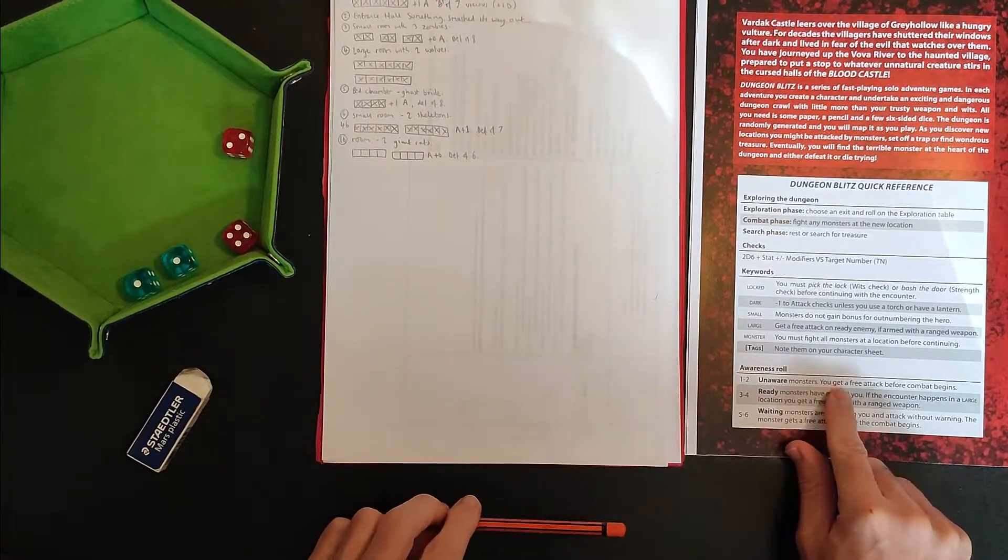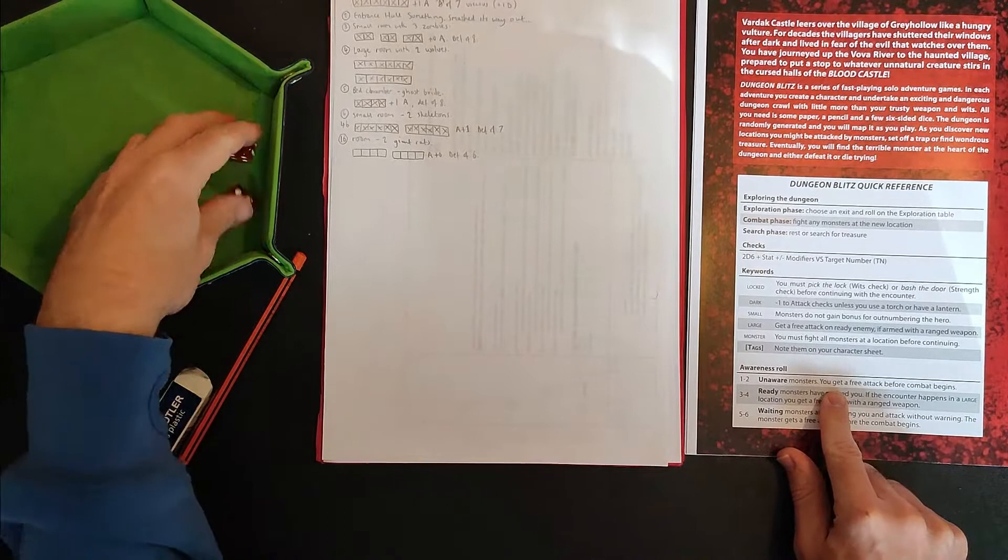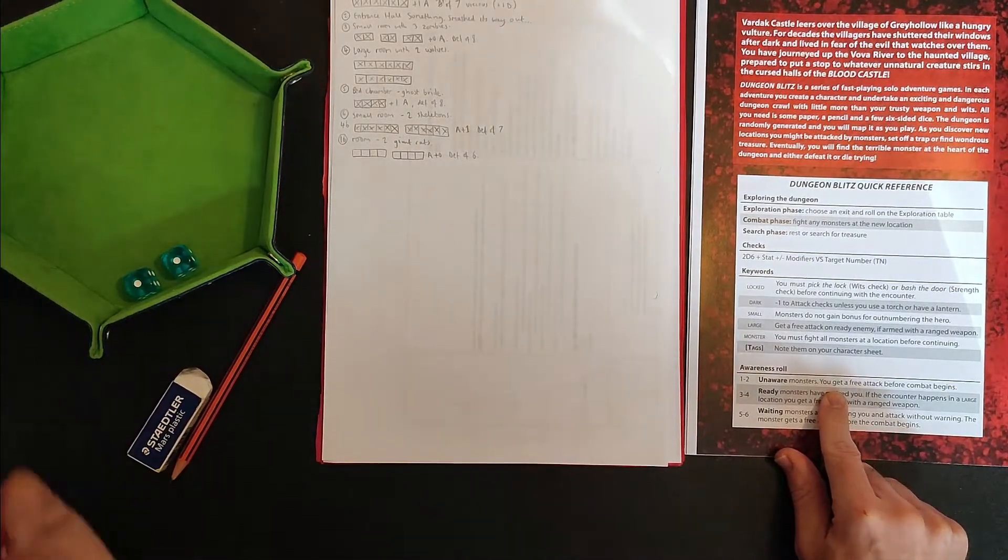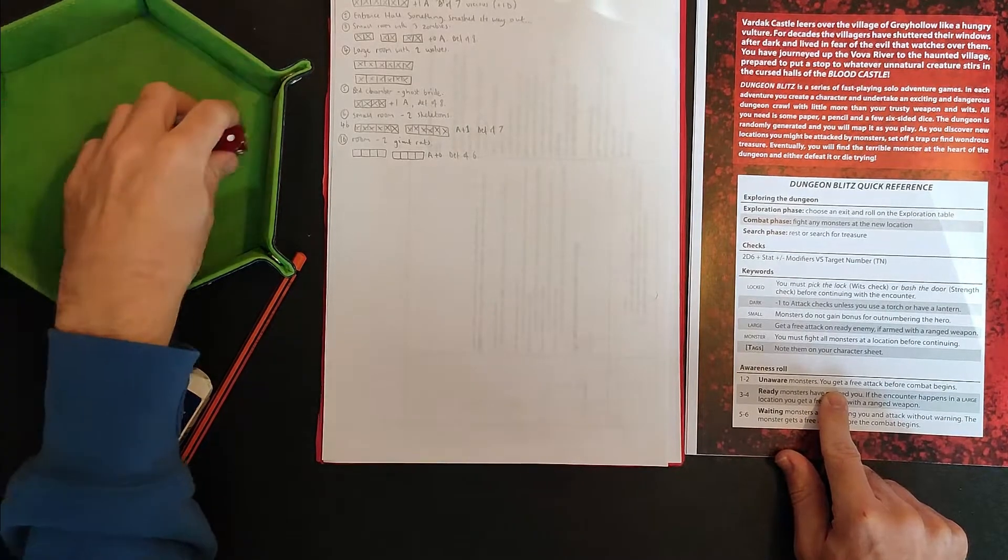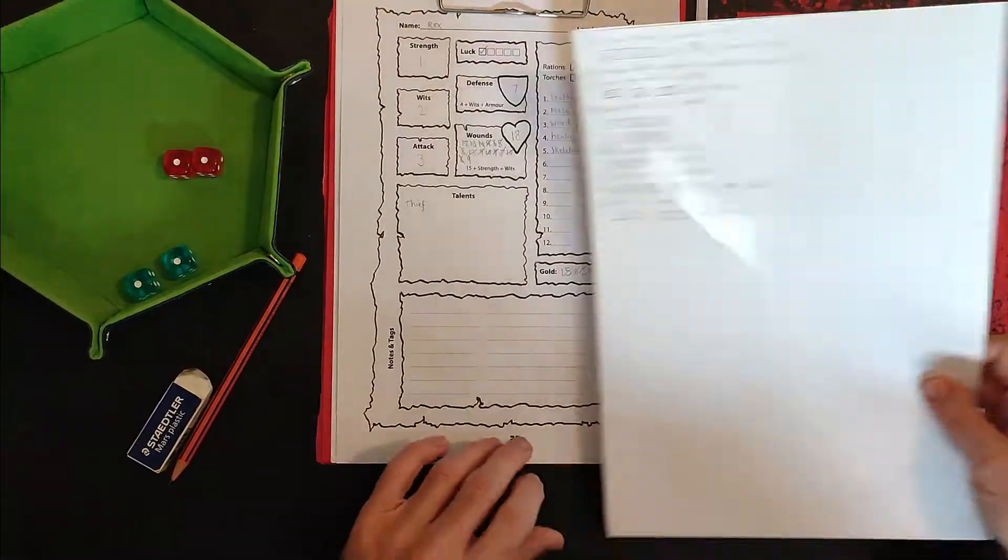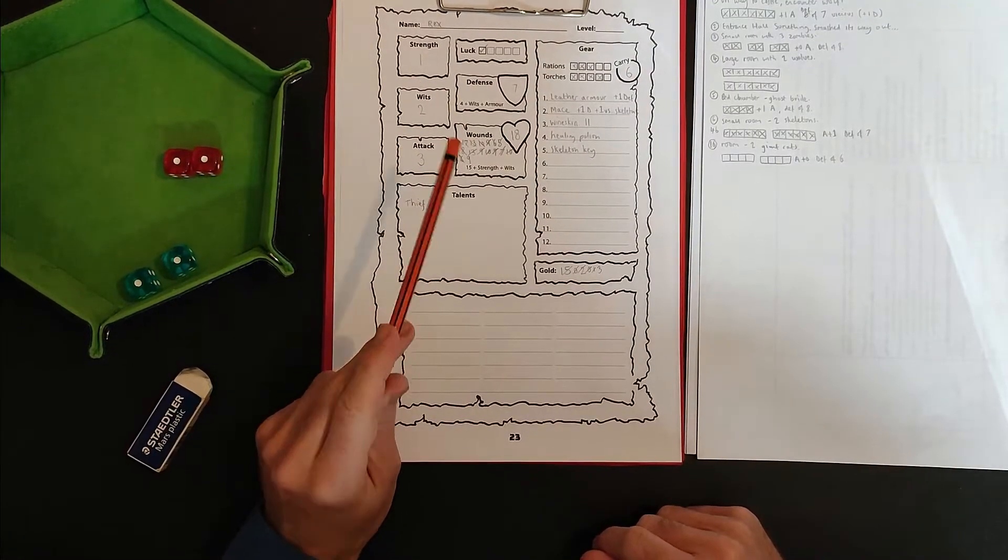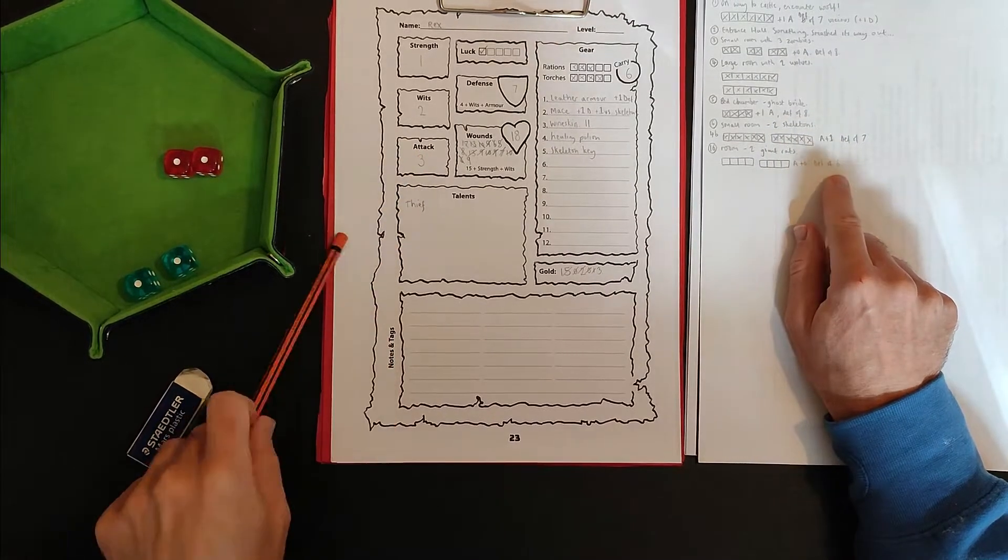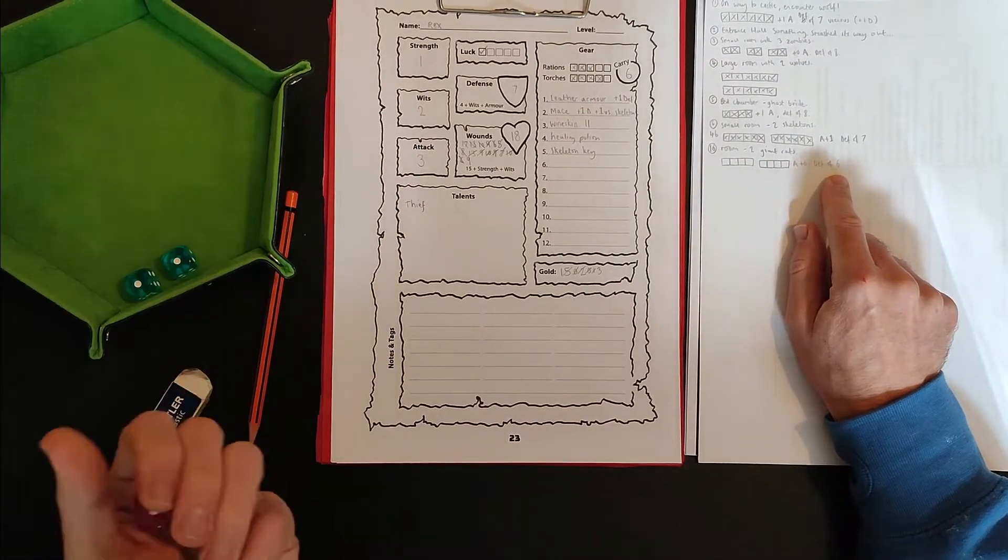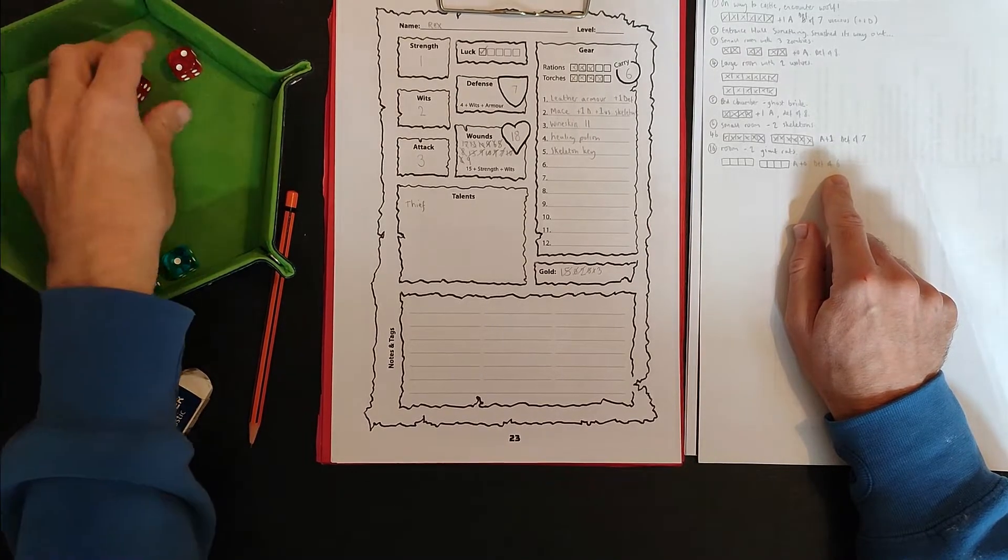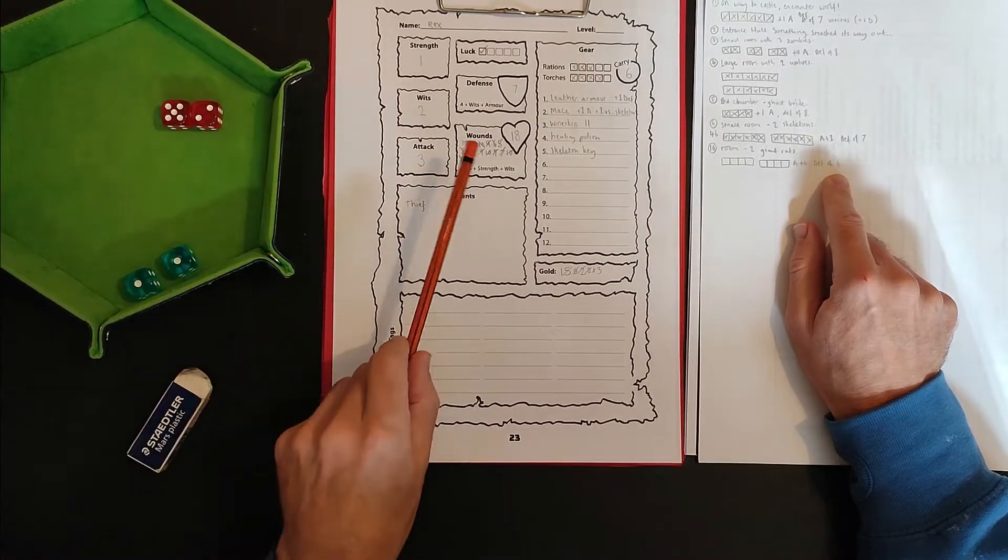Now I've said that I'm probably going to, you know, die during this encounter. Giant rats. Okay, they don't look too scary. So they've got an attack bonus of nothing, a defense of six and four wounds each. So giant rats look like they're sort of the standard beastie for the castle, which makes sense. It's a big castle. Castles have rats. Big castles have big rats. We're going to do the awareness roll to see if we capture them unaware. Two. They are unaware. I get a free attack before combat begins.